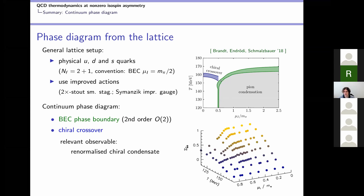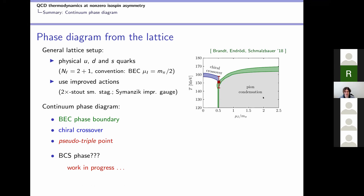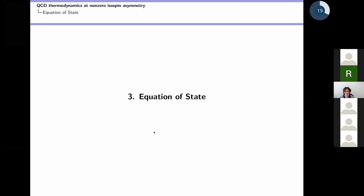We can also look at the propagation of the chiral crossover into this parameter space. The relevant observable is the chiral condensate, in particular its inflection point, and we can draw the resulting curve. At some point these two curves will meet, and this is what we call a pseudo triple point — the meeting point of a crossover and a second order phase transition. If this were a true phase transition, this would really be a triple point. From this meeting point on, the two phase boundaries coincide, and pion condensation occurs at the same point where chiral symmetry is restored. The question of where the BCS phase is in this plot is still work in progress from the lattice.